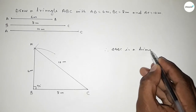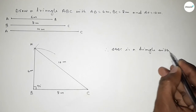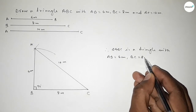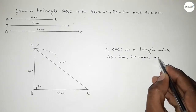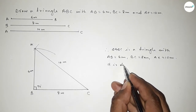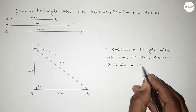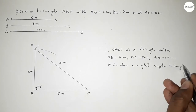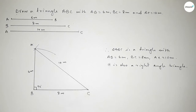Therefore, triangle ABC has AB equal to 6 centimeters, BC equal to 8 centimeters, and AC equal to 10 centimeters. It is also a right angle triangle with height equal to 6 centimeters, base equal to 8 centimeters, and hypotenuse equal to 10 centimeters. That's all — thanks for watching. If this video is helpful to you, please share it with your friends.